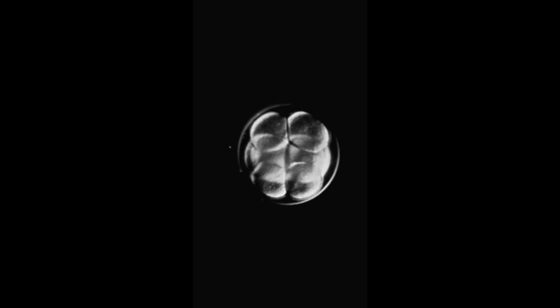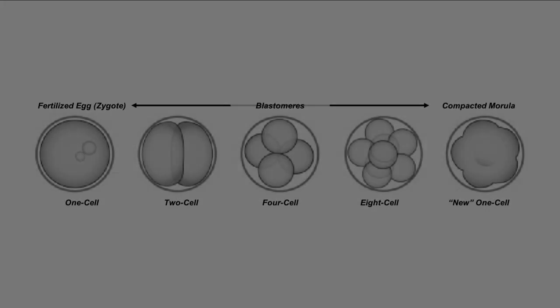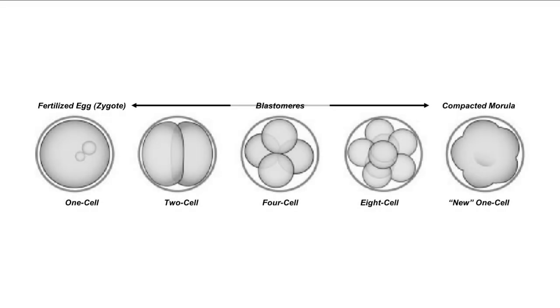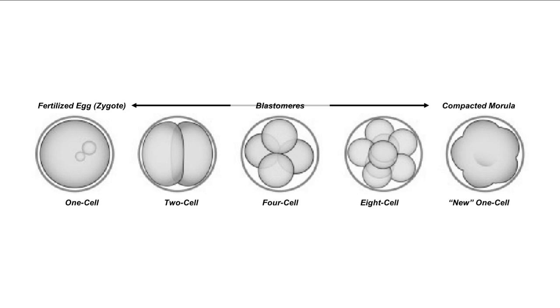Compaction is when the round and loosely connected blastomeres assume a flattened, polarised cell morphology. The outer cell surface becomes convex, and the inner surface becomes concave.